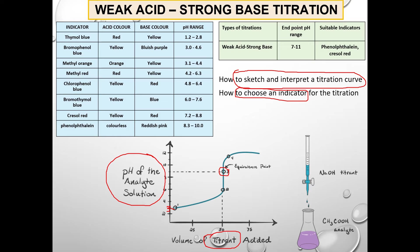At the equivalence point, only salt and water is present. As you have studied in salt hydrolysis, the pH of a salt formed between a weak acid and a strong base will be basic, with pH more than 7. Therefore, at the equivalence point, the pH will be more than 7. At any point after the equivalence point, there will be an excess of sodium hydroxide as all the ethanoic acid has been neutralized, and the pH will be basic. You will notice a steep part in the titration curve.